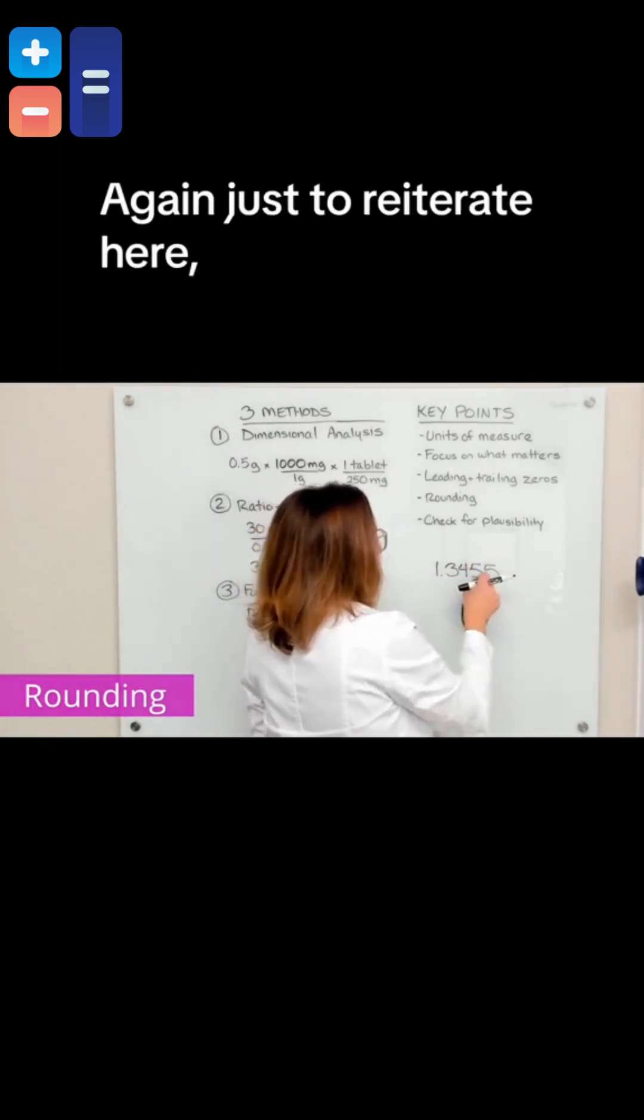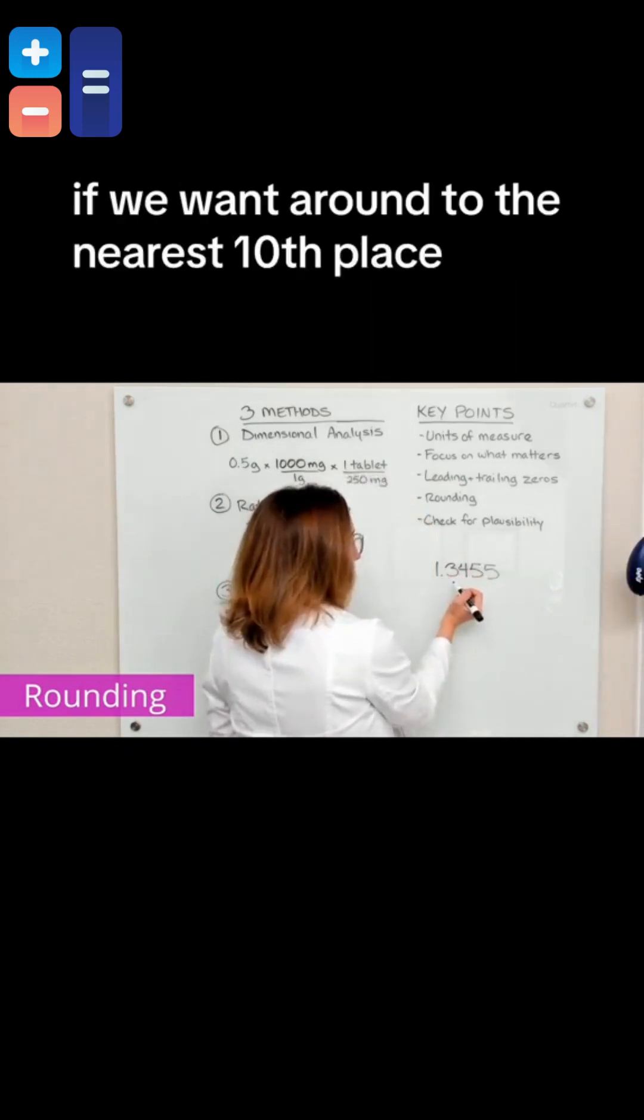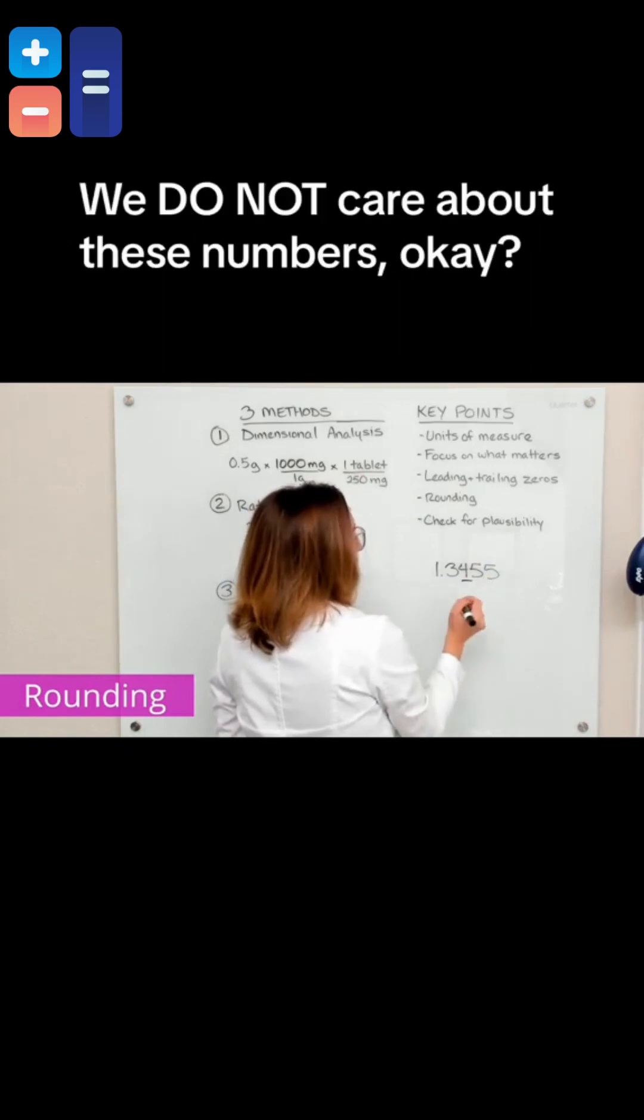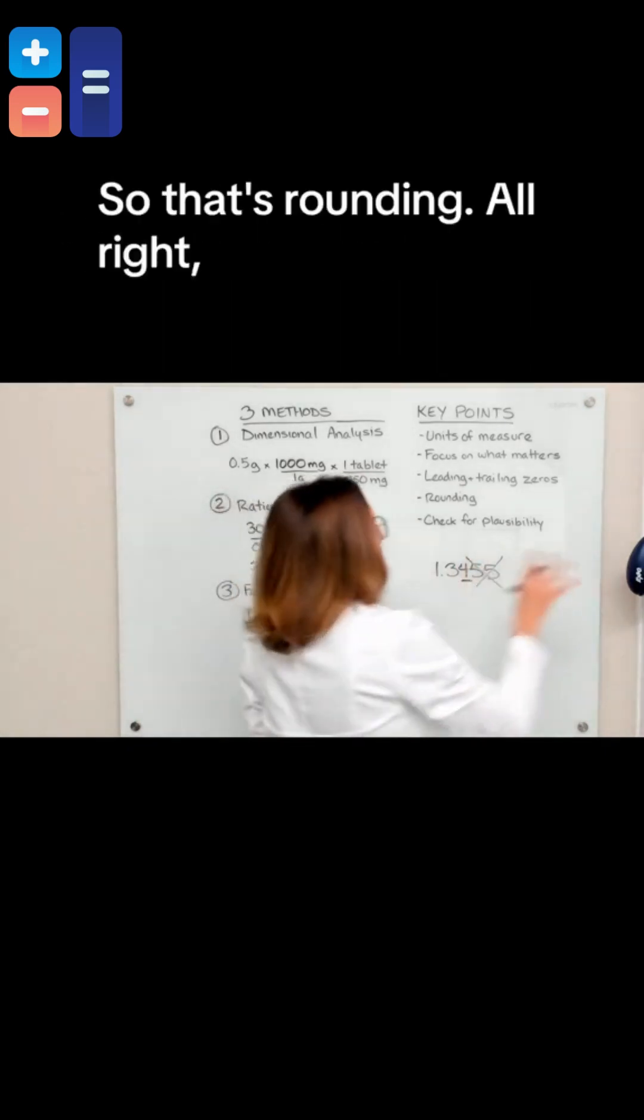Just to reiterate here, if we want to round to the nearest tenths place, we only need to look here. We do not care about these numbers. So that's rounding.